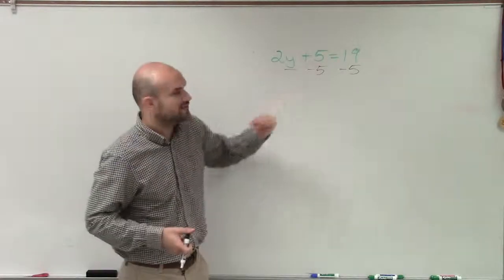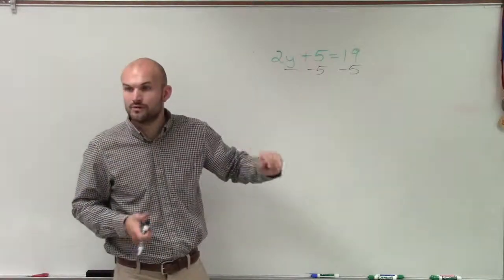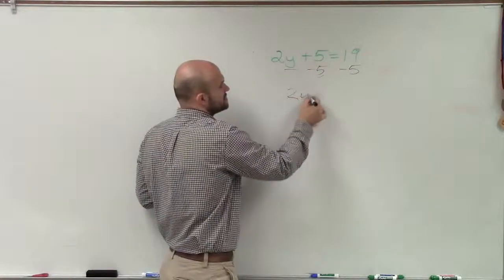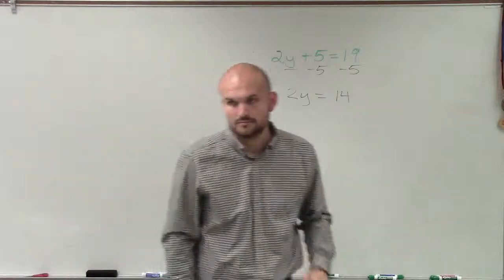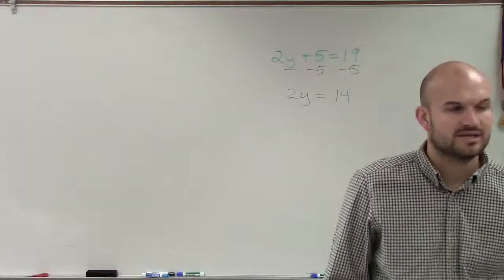Okay. So therefore, five minus five is zero, and therefore I'm just left with 2y equals 14. Okay? Which one is this? Number seven.